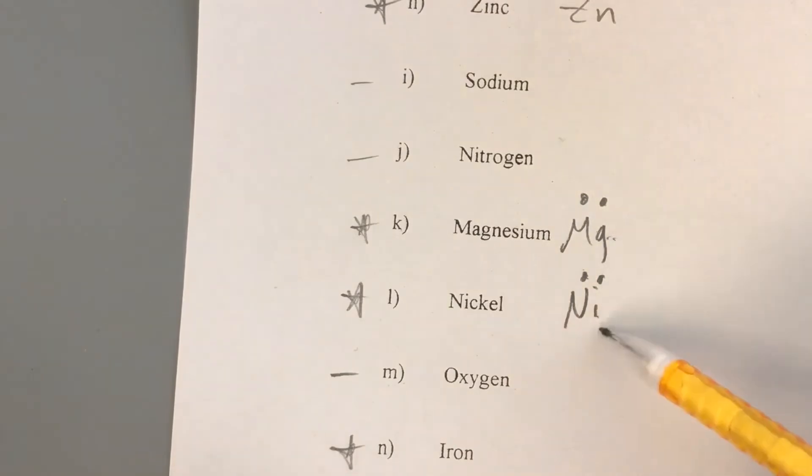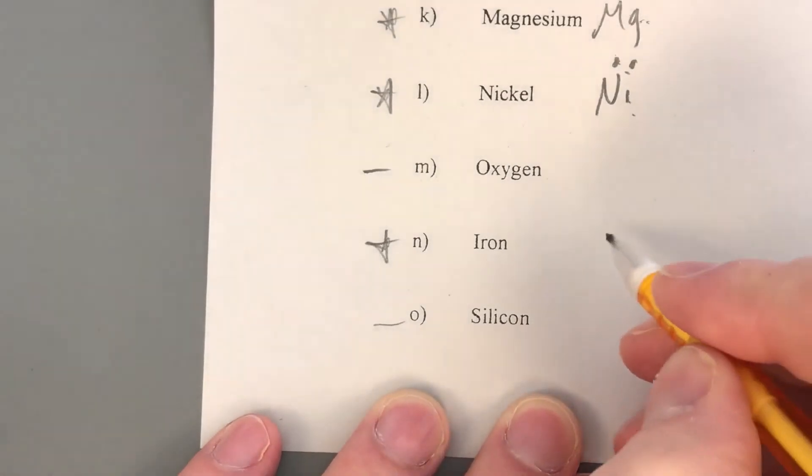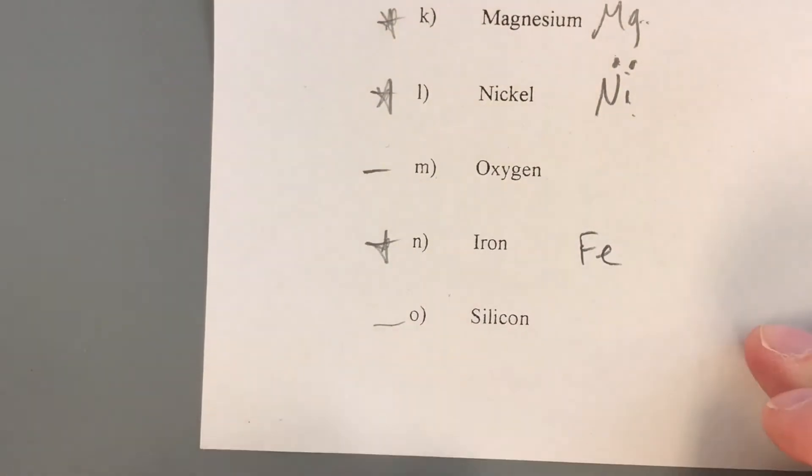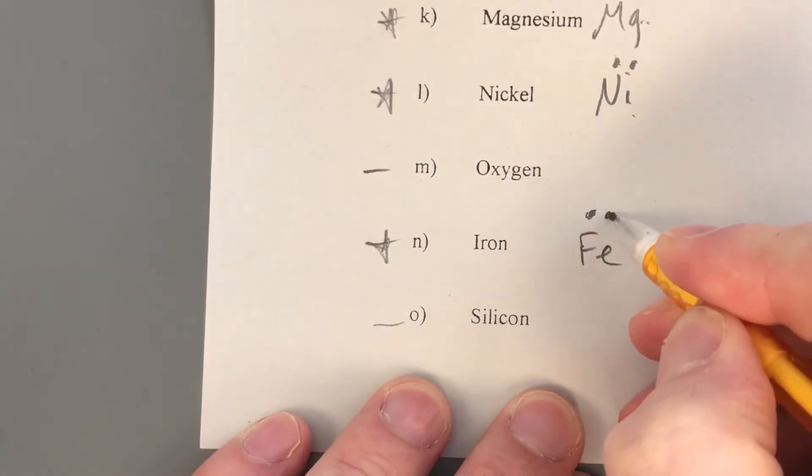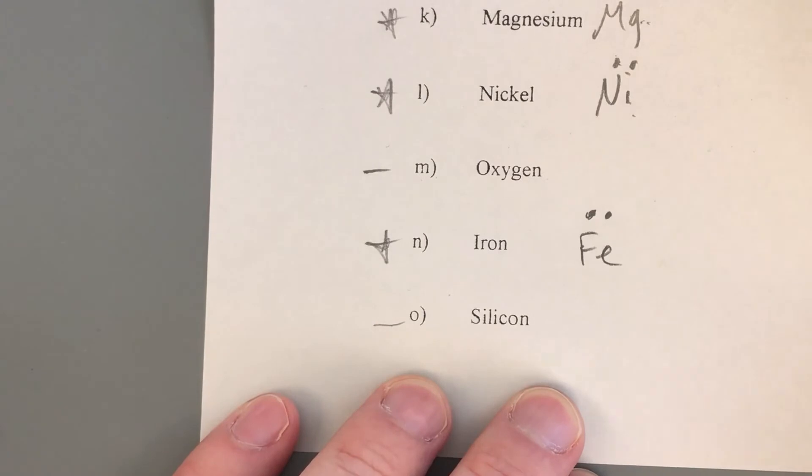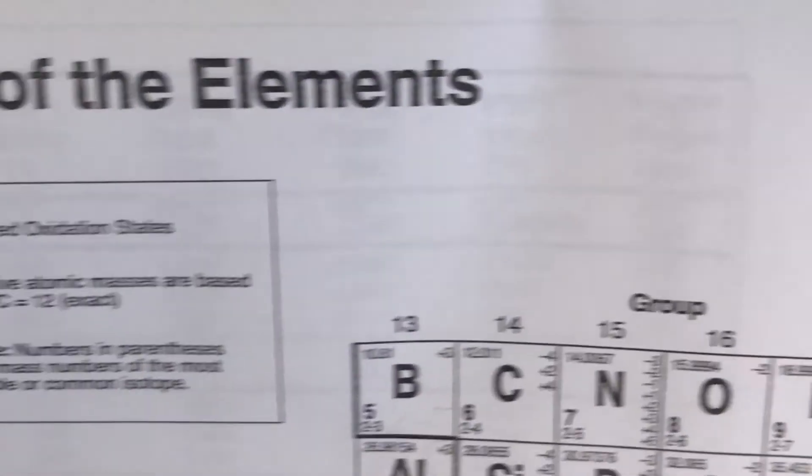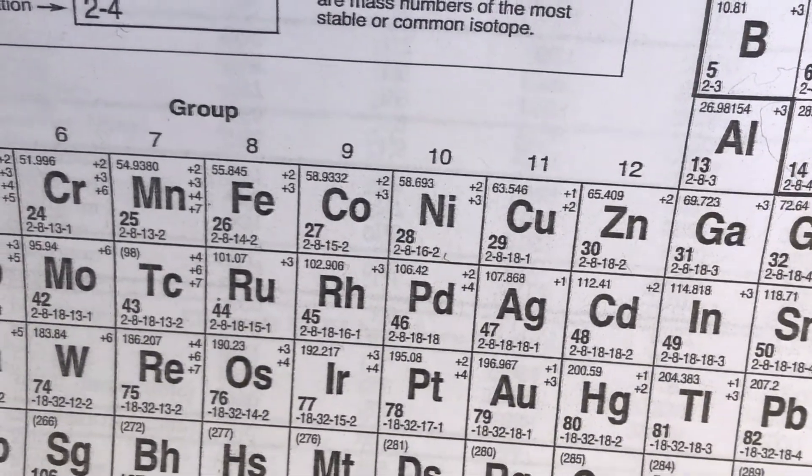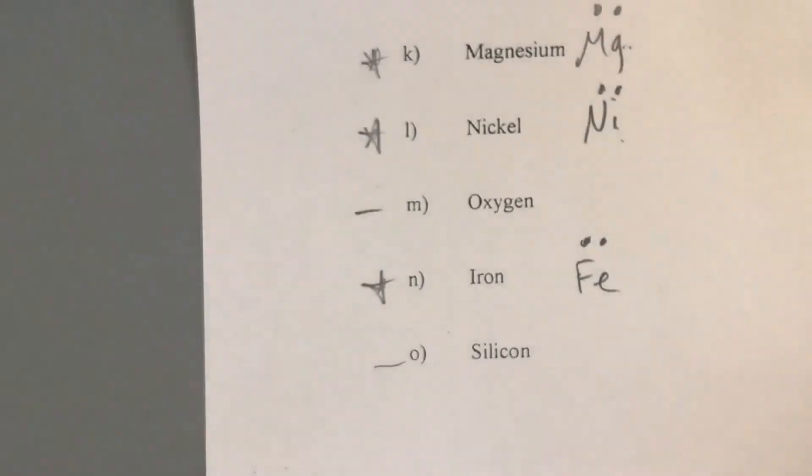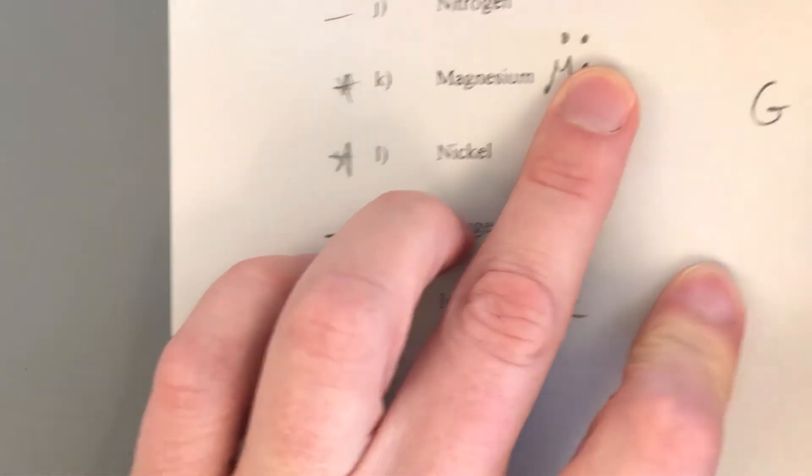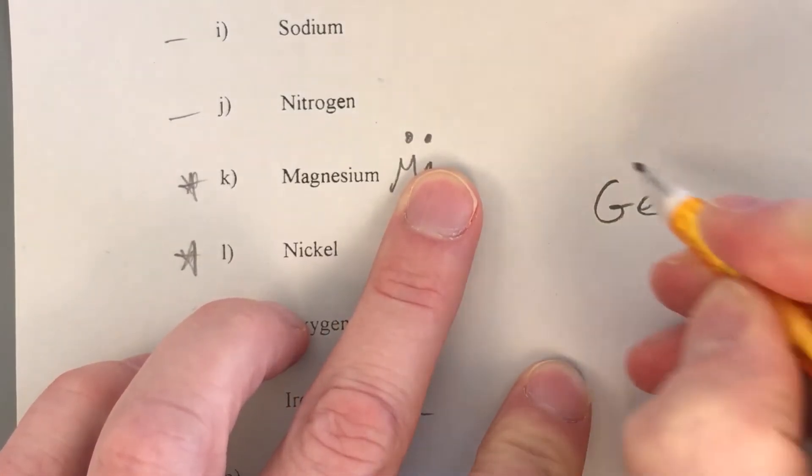If we go into iron, iron of course symbol is Fe, that is also a two. Now just for the sake of what we're doing here, one of the ones I'll pick another one that isn't on the list—let's see, we'll go with germanium, Ge. That's a four.